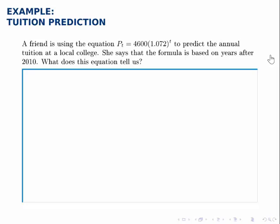Let's interpret a given exponential model. Say a friend is using the equation P of t equals 4,600 times 1.072 raised to the power of t to predict the annual tuition at a local college.